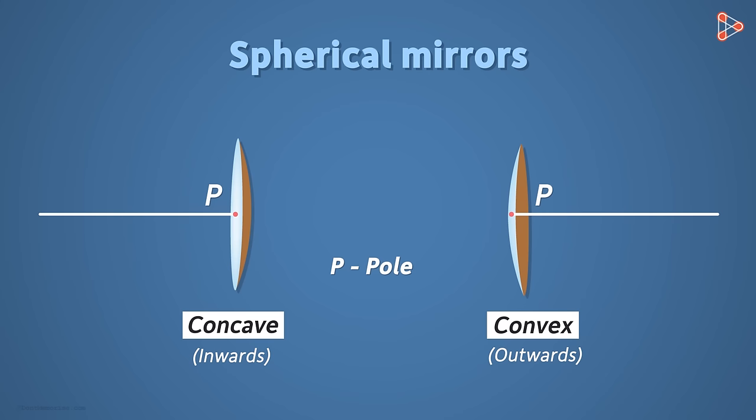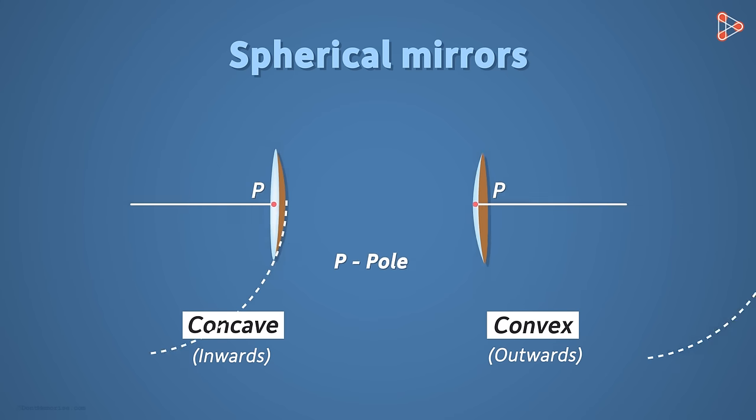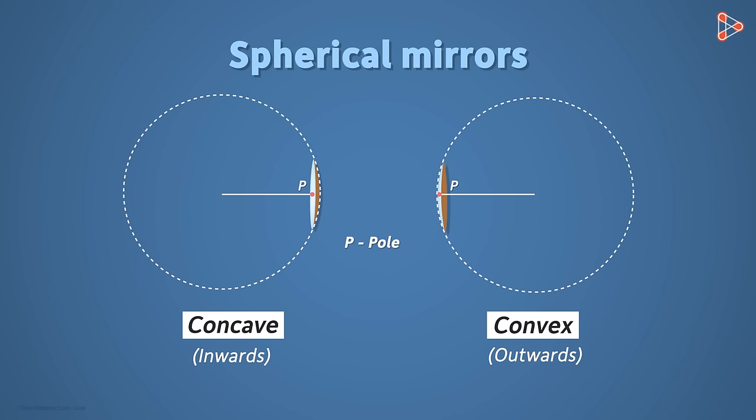Now as I told you, the reflecting surface forms a section of the sphere. This sphere must have a center. This center of the sphere is called the center of curvature, denoted by C. And what will the radius be called? Yes, it's called the radius of curvature.